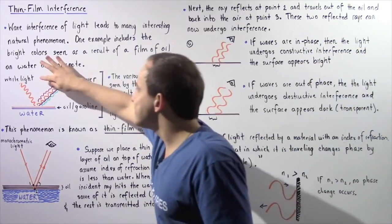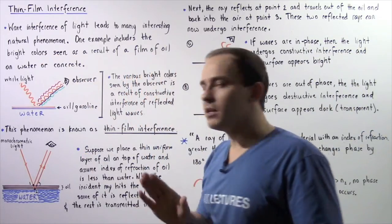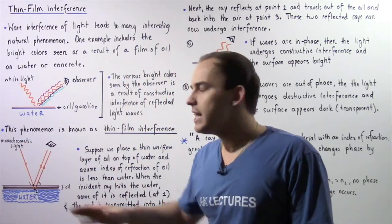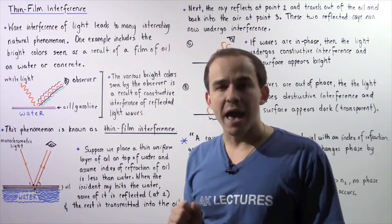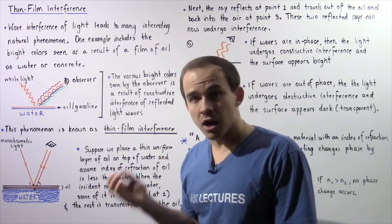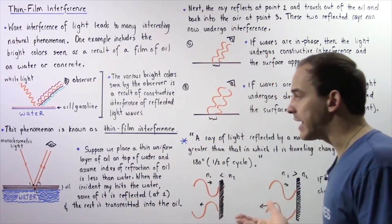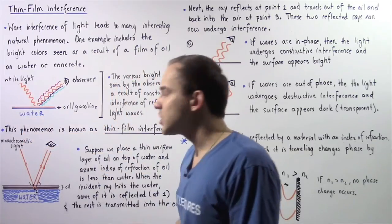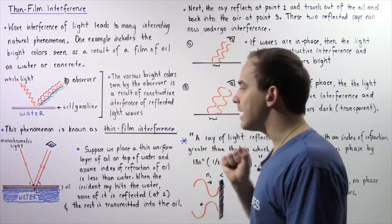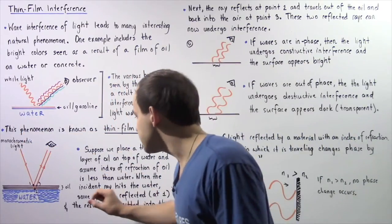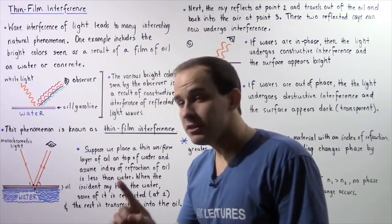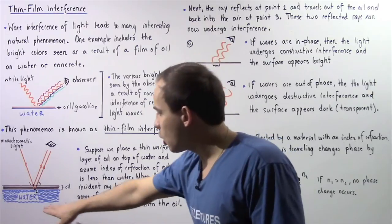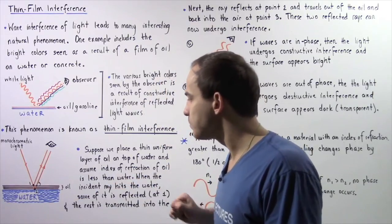Instead of looking at white light, let's suppose we have a single ray of light that is monochromatic, meaning it's a single color, a single wavelength. When it hits the surface, dispersion does not take place. Let's suppose we have a thin layer of oil placed on top of water as shown in the following diagram.